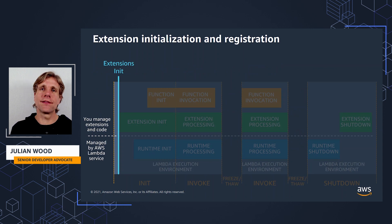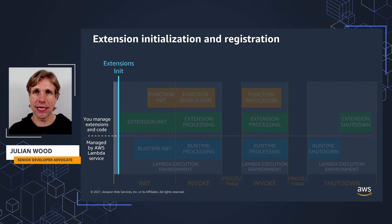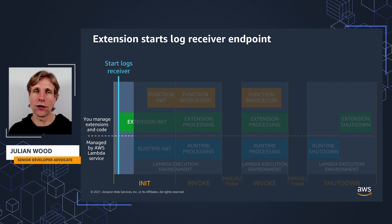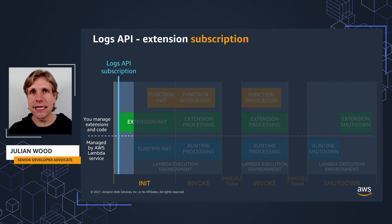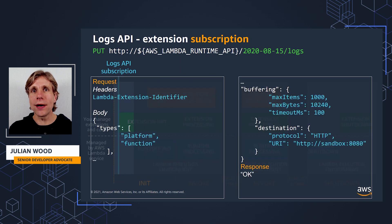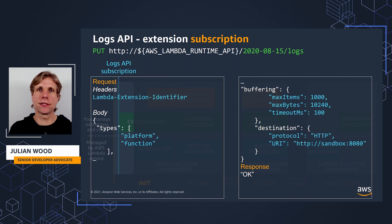Looking at the Lambda lifecycle — which I covered in detail in the videos on building Lambda extensions — let's look at how logs fit into the lifecycle. When the extension initializes, it registers with the extensions API. The extension should then start the logs receiver, which is the local HTTP or TCP endpoint that's going to receive the logs from Lambda. When the extension is ready to receive logs, it registers with the logs API with a PUT API call using the AWS Lambda Runtime API environment variable and the version prefix 2020-08-15, then slash logs. In the request, it needs to send the extension identifier in the header, and in the body includes which log streams to subscribe to: platform, function, and extension.